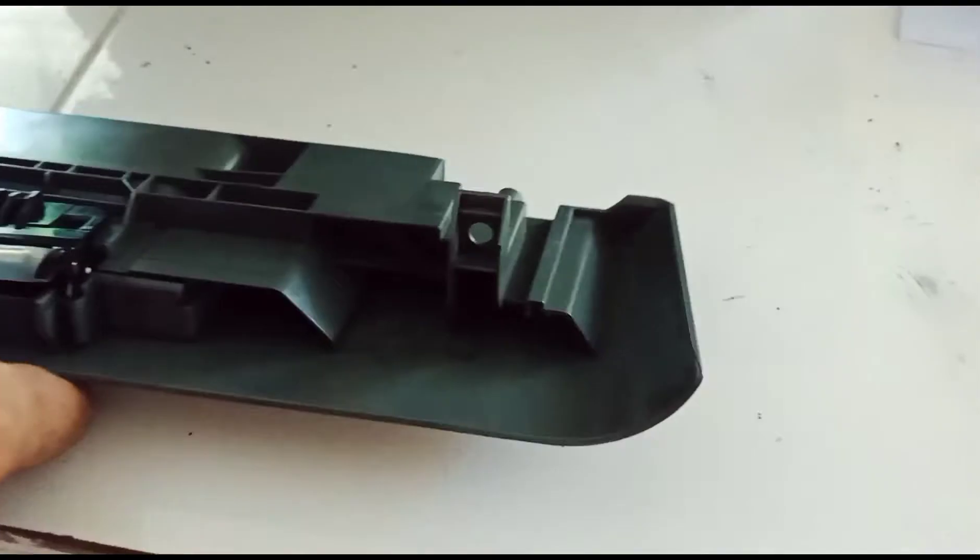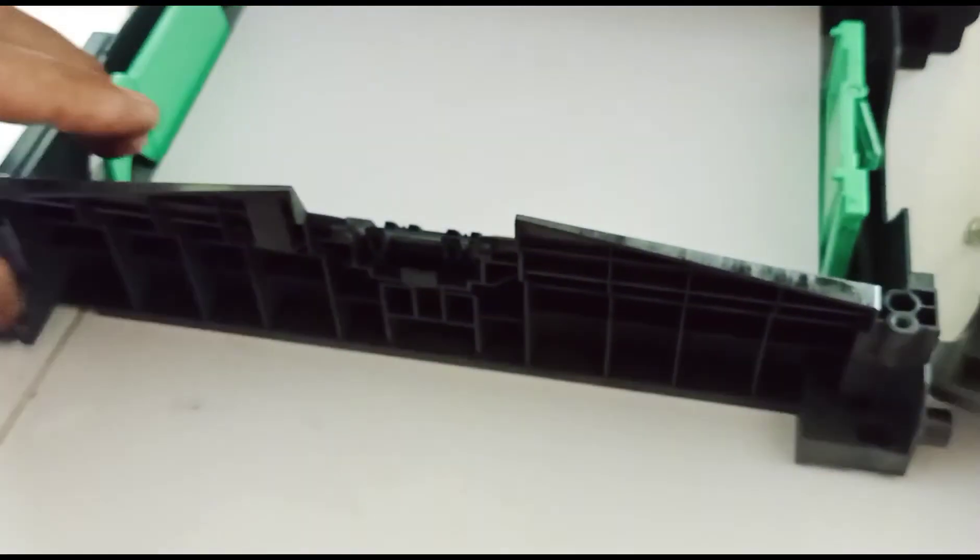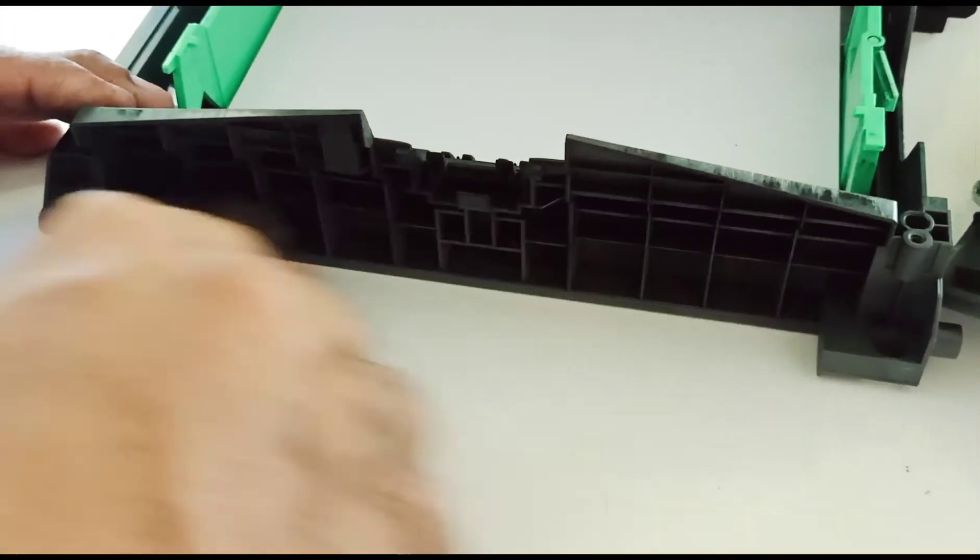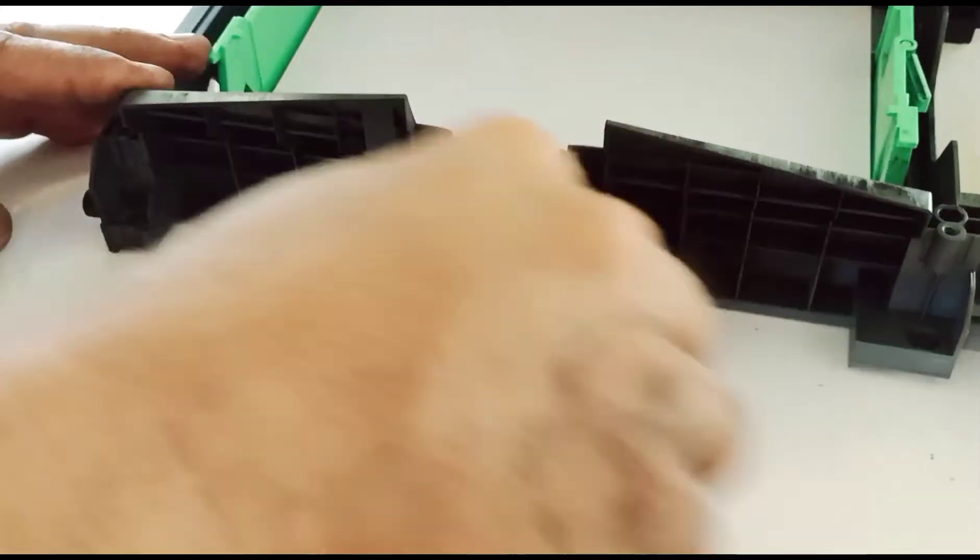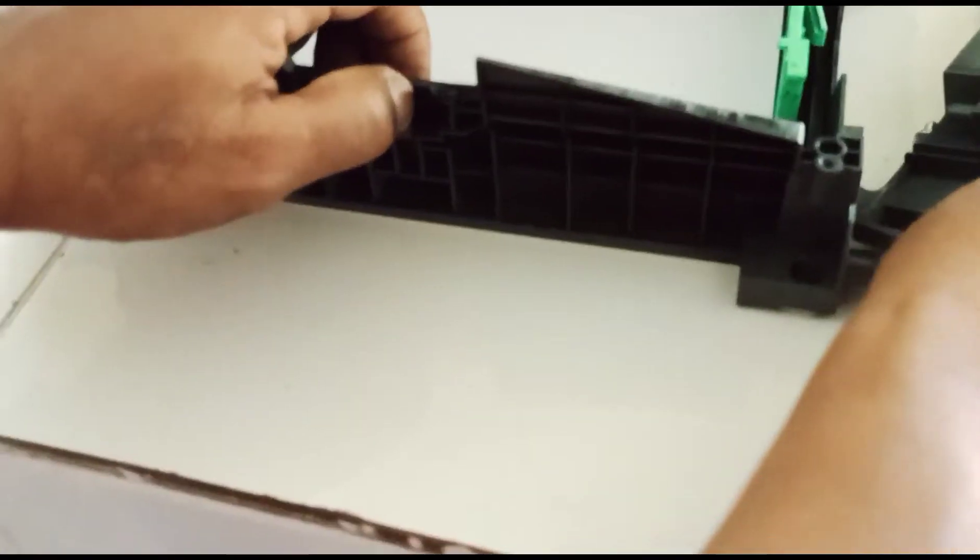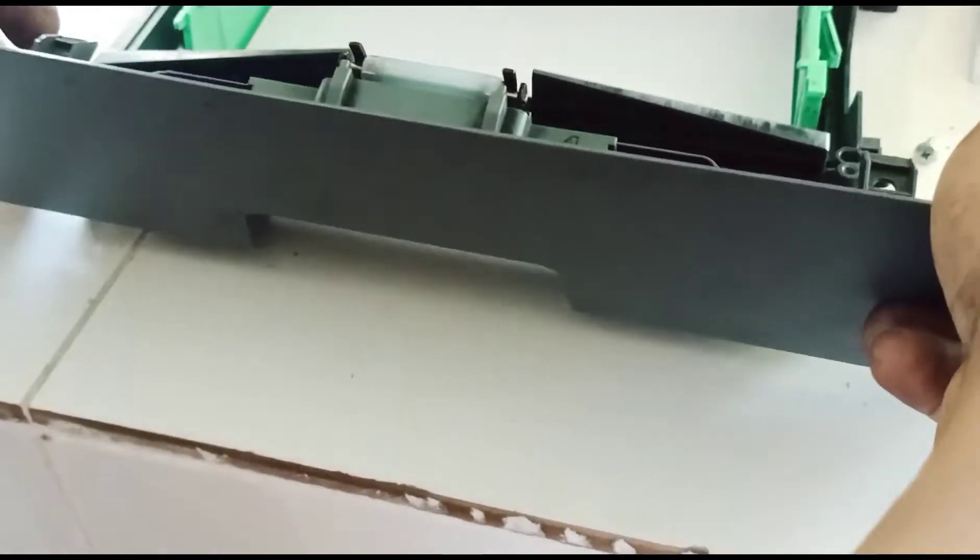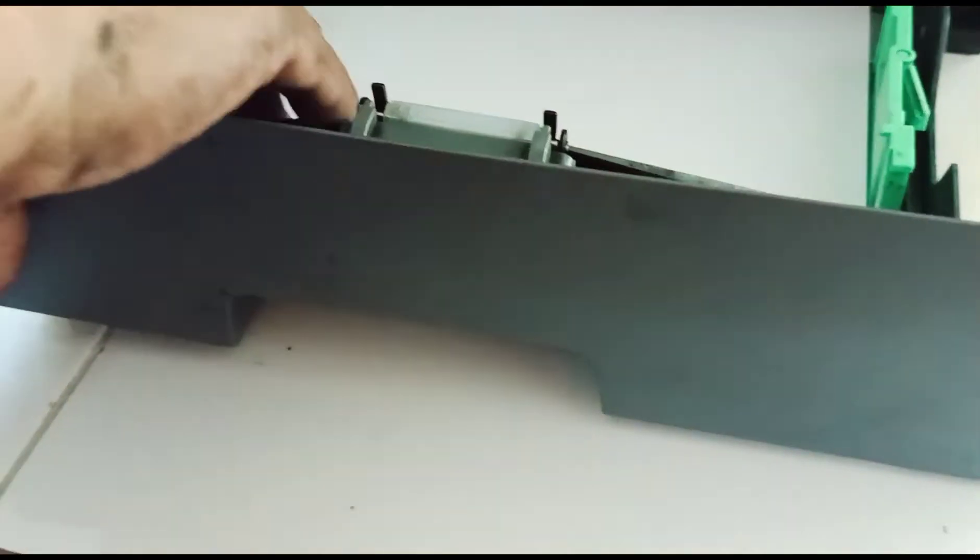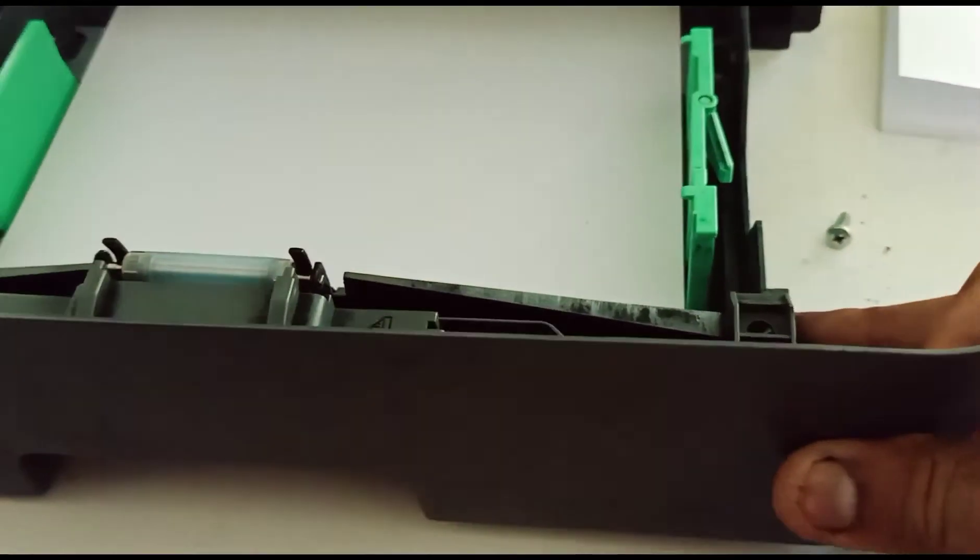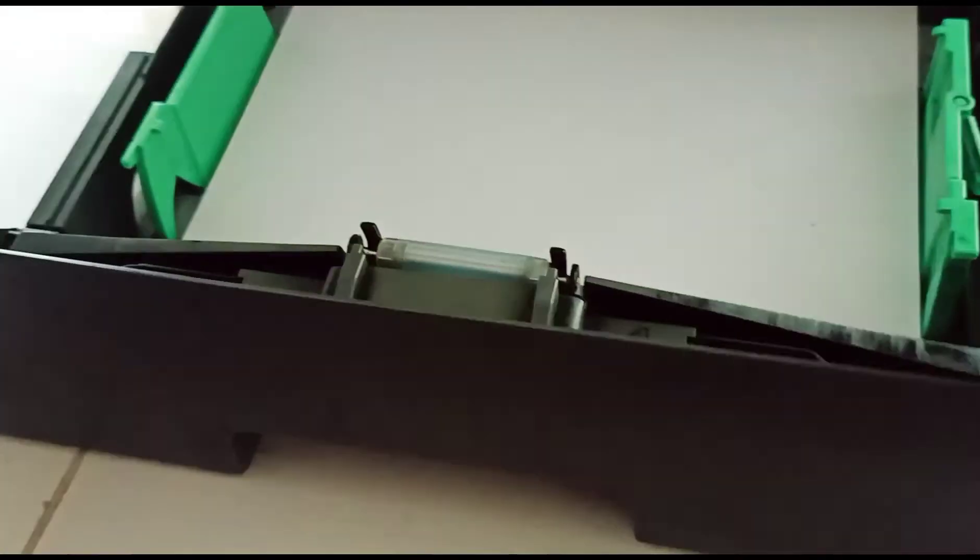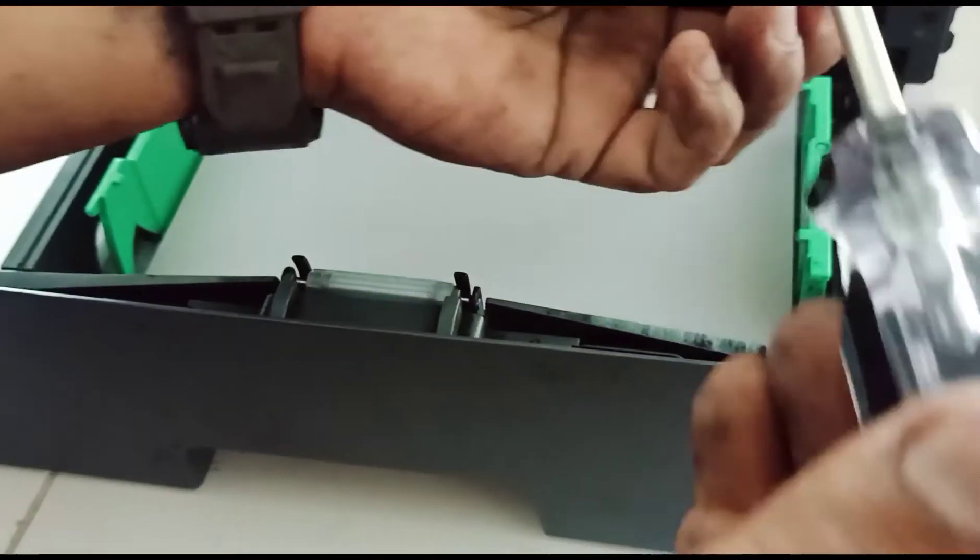Medyo babrasin lang natin ng konti para malinisan, para swabing swabi yung kain ng pickup rubber tsaka itong roller dito sa ating printer. Kung kanina paangat, gagawin nyo naman pababa naman. Tapos screwan nyo na.